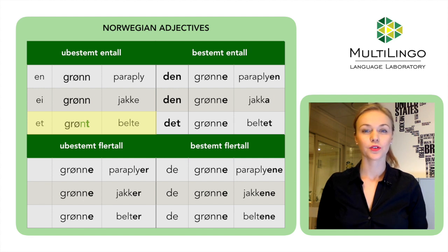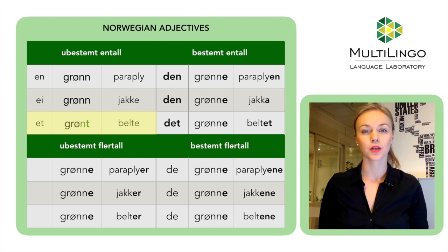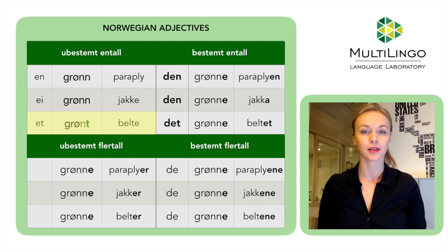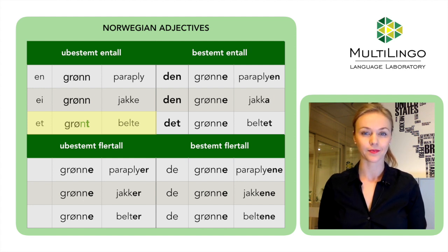Just pay attention for the neuter. If you have an adjective that ends in a double consonant, you'll have to replace one of the consonants with -t for singular indefinite. Et grønt belte. But the rest of the forms will behave just the same.